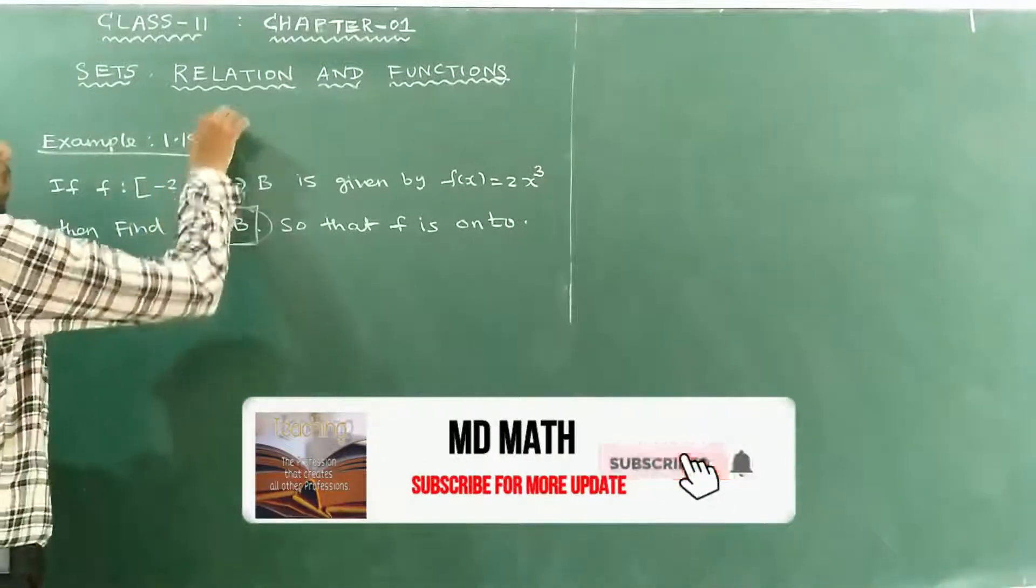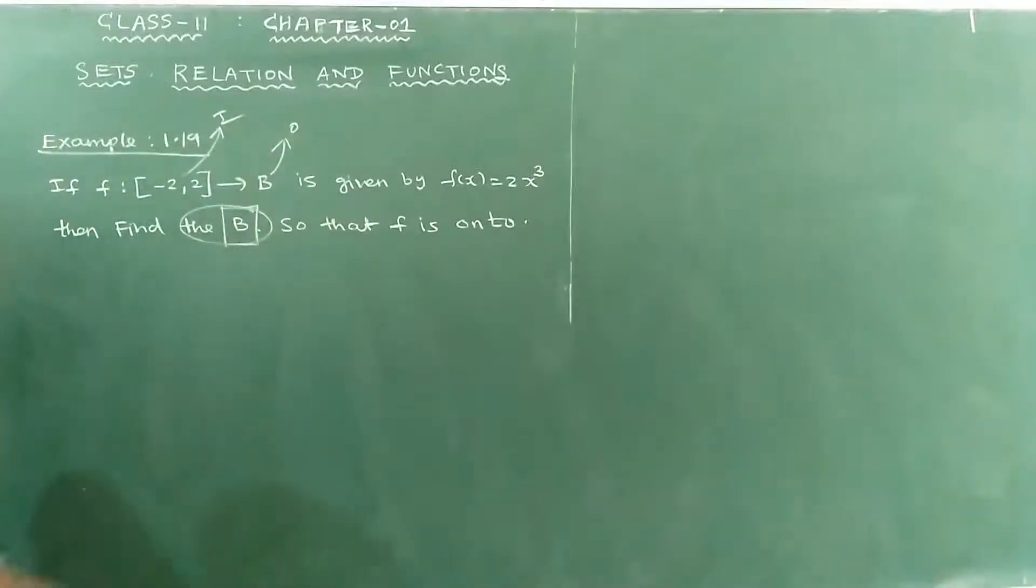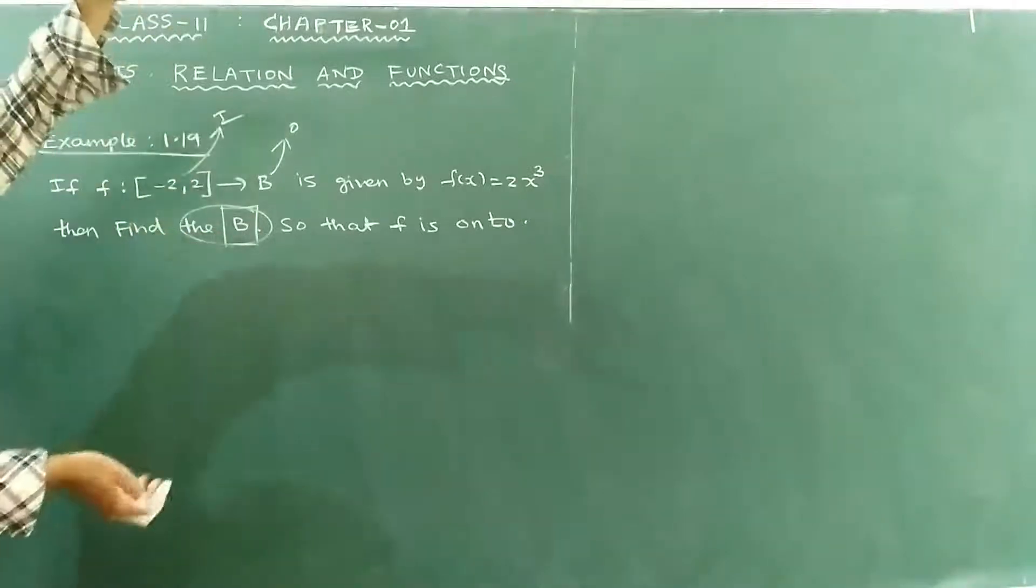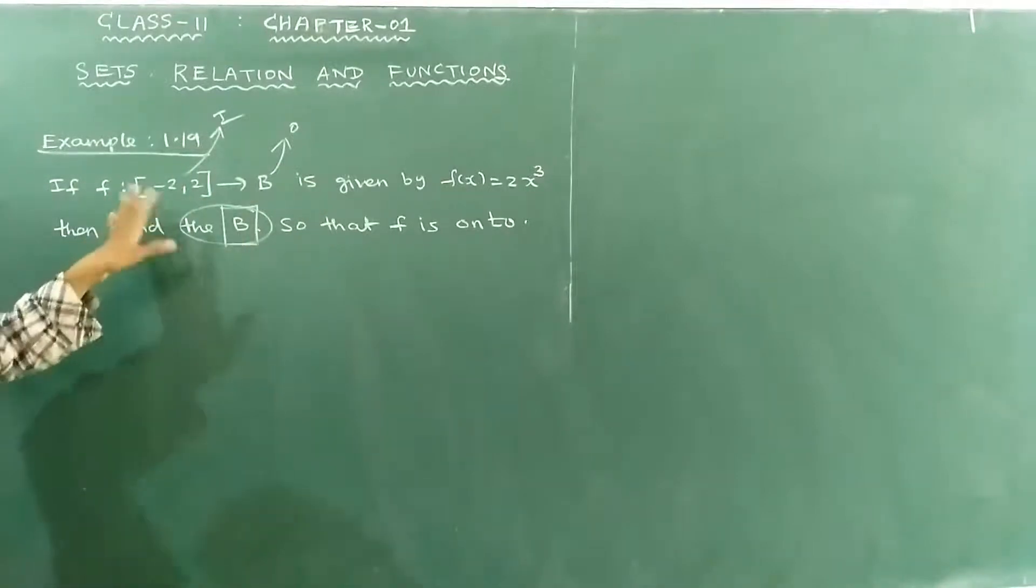This is called the input. Input is simple, output is simple. So if all output is equal to minus 2 and plus 2, it will be maximum and minimum range.